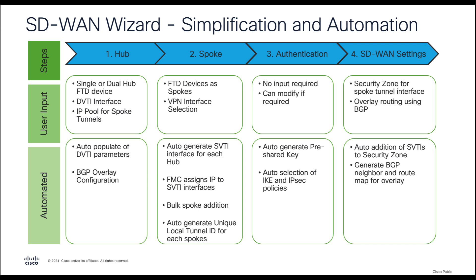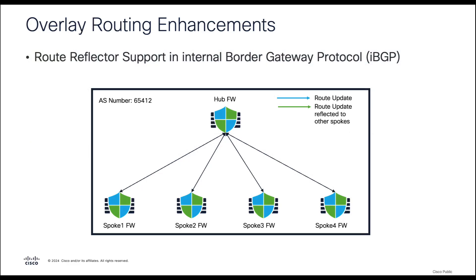Let's take a look at the enhancements within the SD-WAN wizard. One of the key considerations in the SD-WAN topology is to allow spoke-to-spoke communication. To implement this without requiring full mesh connectivity, the wizard brings support for the route reflector, allowing the hub to be configured as a route reflector while the spokes are configured as route reflector clients.